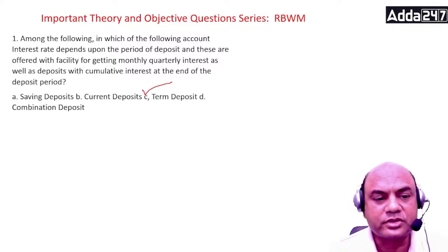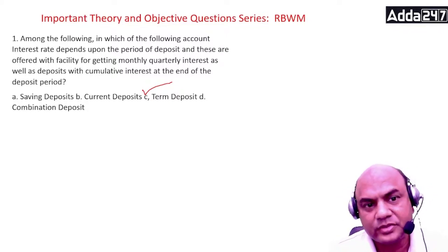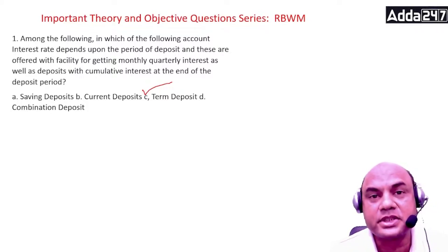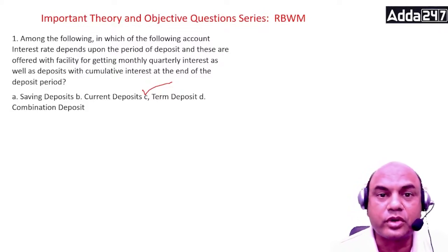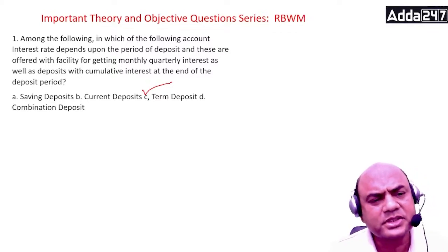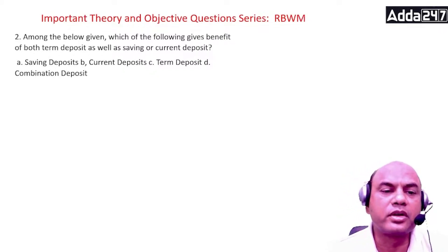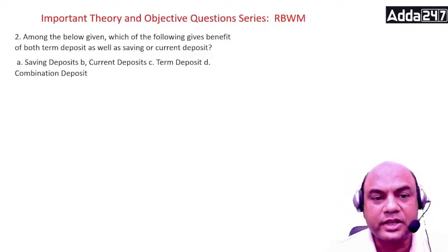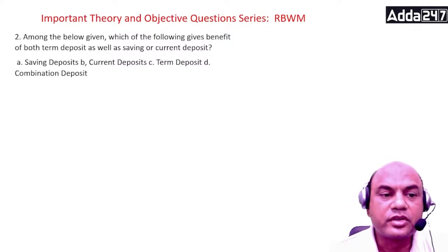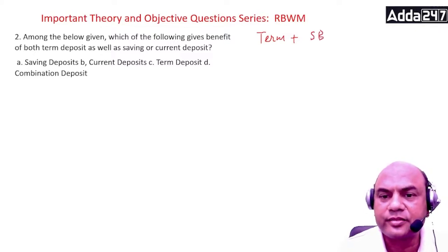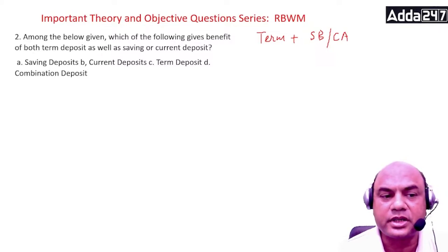Combination deposits mean FD plus savings — called sweep in, sweep out. Current accounts are for businesses; savings accounts are for personal use. Among the given options, which gives the benefit of both term deposit as well as savings or current deposit? The answer is combination deposit.